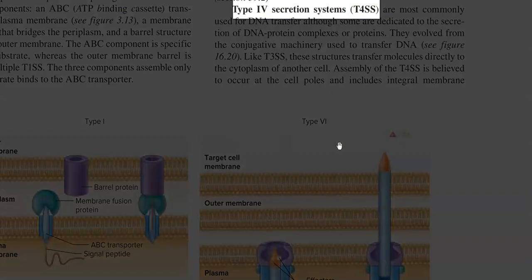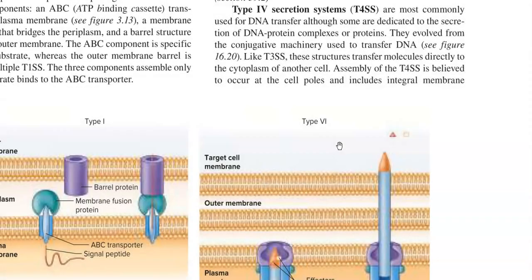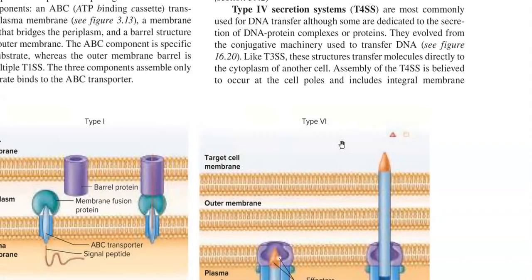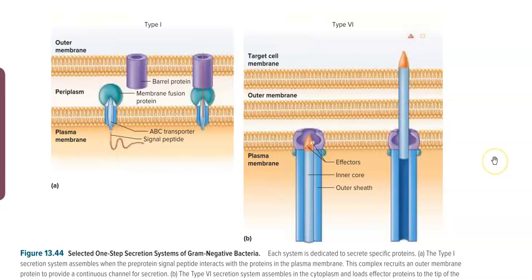The Type 4 secretion system is most commonly used for DNA transfer, although some have been dedicated to secretion of DNA-protein complexes or proteins into cells. They evolved from the conjugation machinery used to transfer DNA. Like Type 3, this system is also involved in direct transfer of DNA into the cytoplasm of another cell. Assembly of the Type 4 secretory system is believed to occur at the cell poles, and it includes integral membrane proteins housed in both the plasma membrane and the outer membrane.